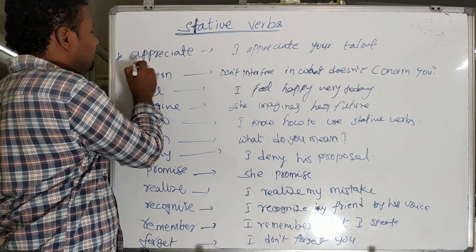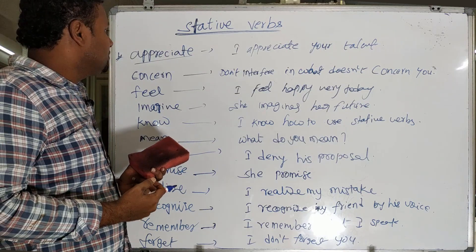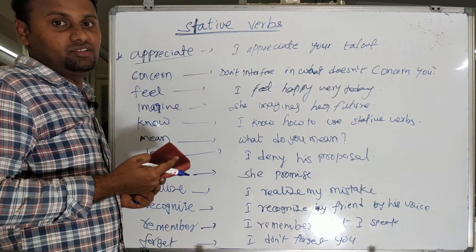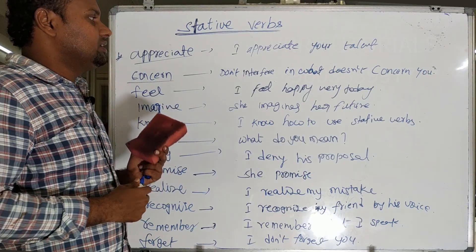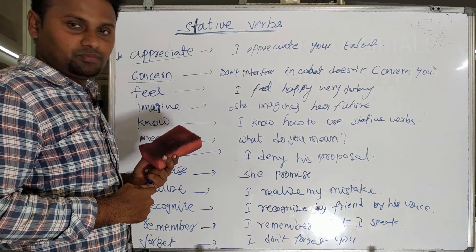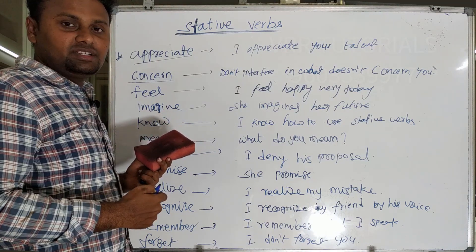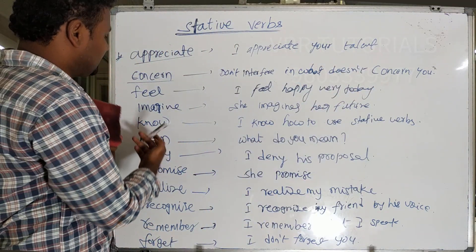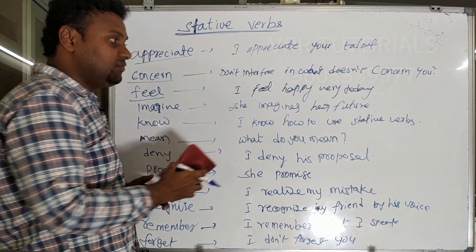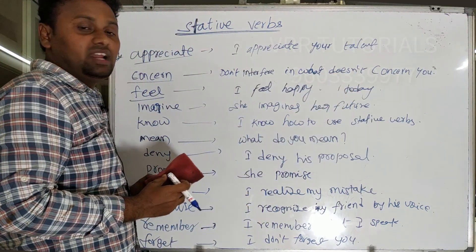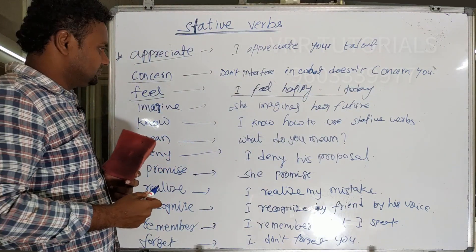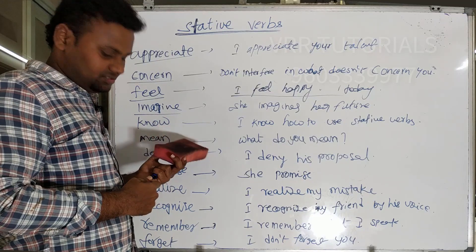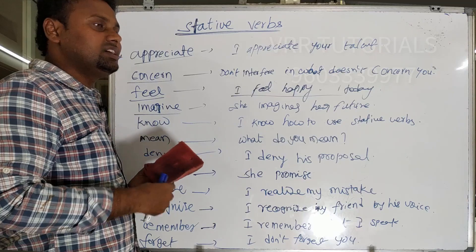Next: 'appreciate.' I appreciate your talent. Don't say 'I am appreciating your talent' in continuous tense. Next: 'concern.' Don't interfere in what doesn't concern you — we don't use 'is not concerning you.' Next: 'feel.' I feel very happy today — that is appropriate. Next: 'imagine.' She imagines her future everyday. Don't say 'she is imagining her future.' She imagines her future.